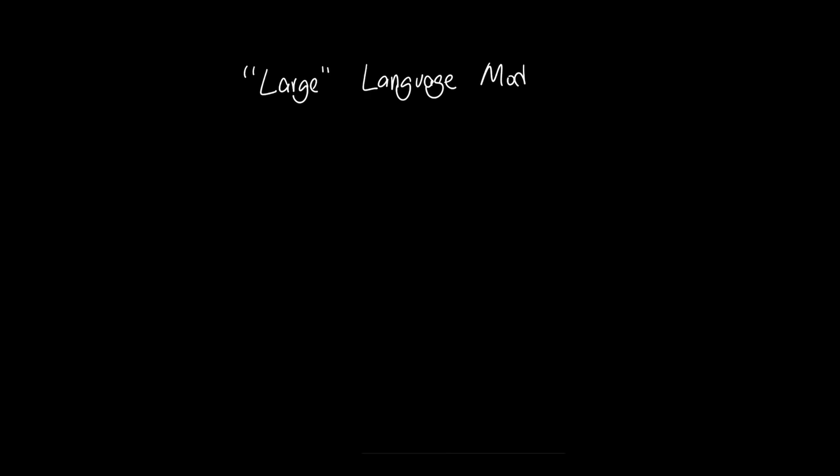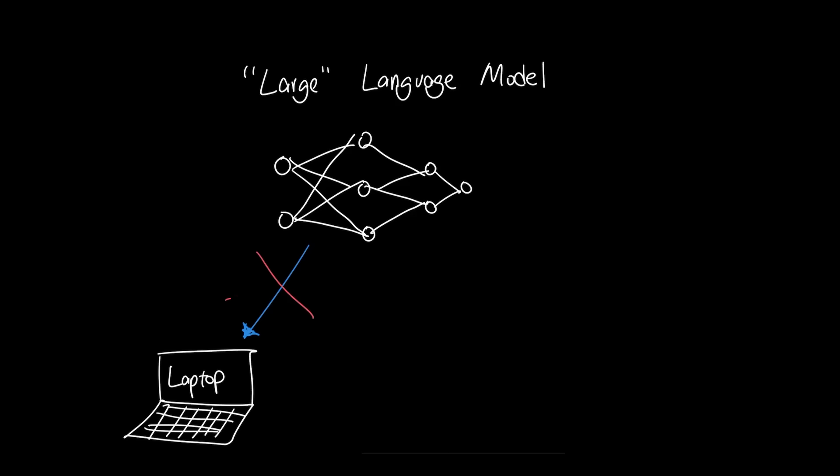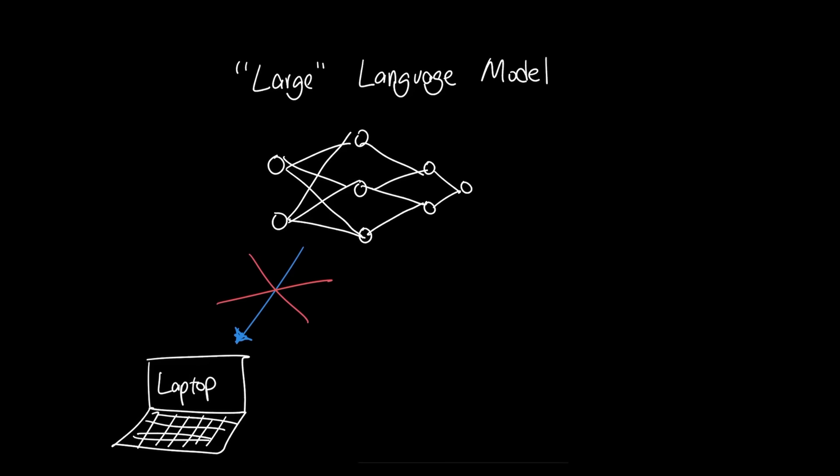The reason why Kimi K2 is not widely known has mostly to do with the word large in the large language model, meaning these open source models are still too large to run locally to get the same result as state-of-the-art models.